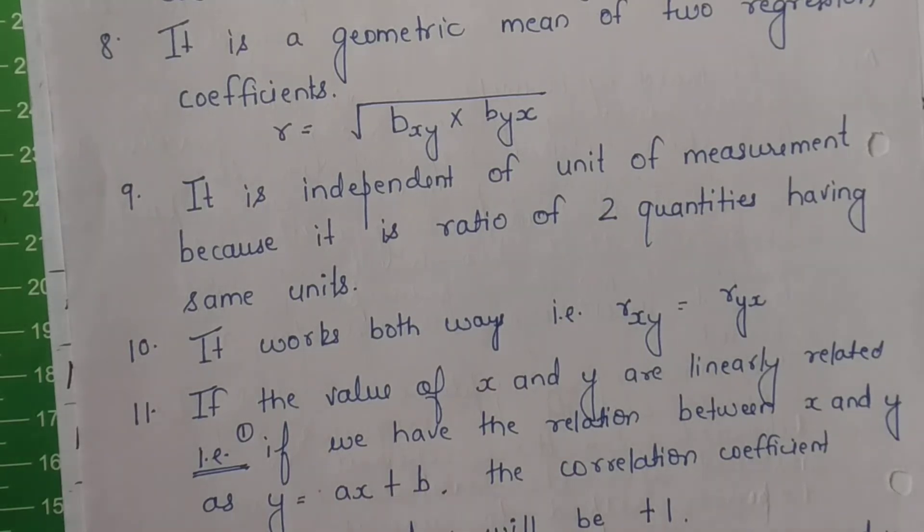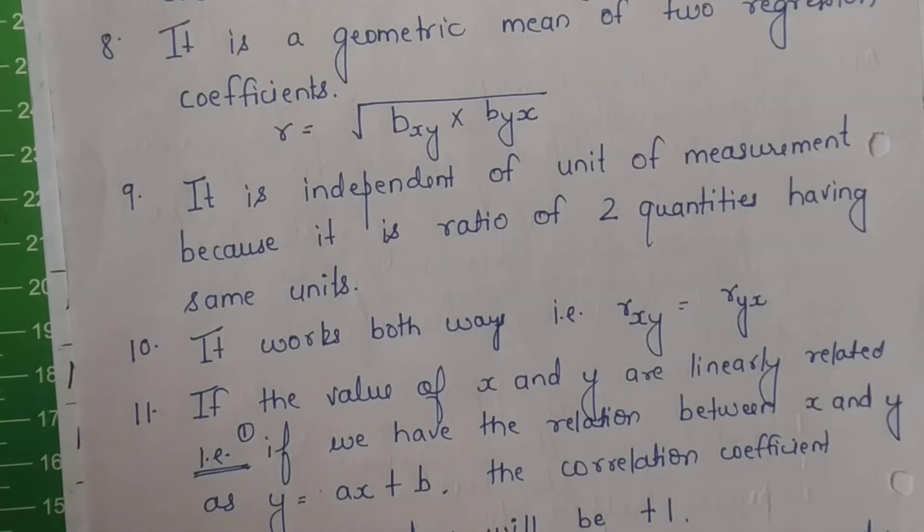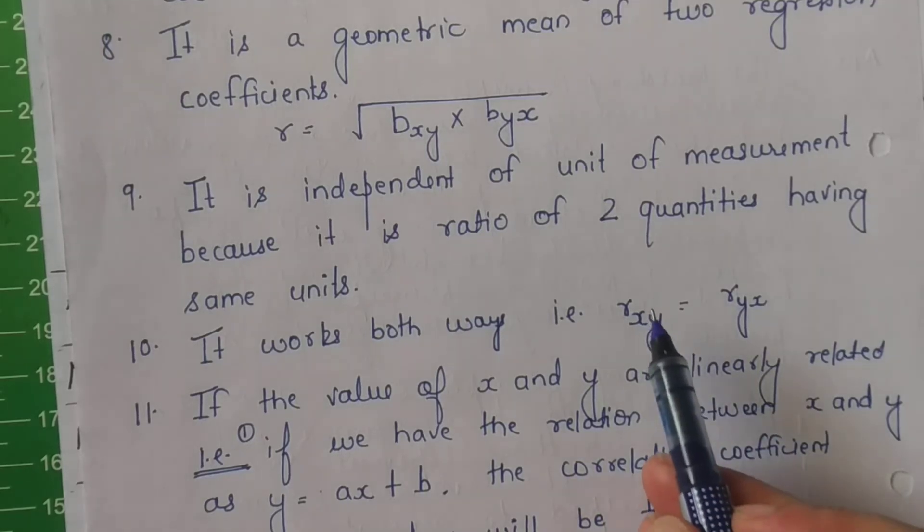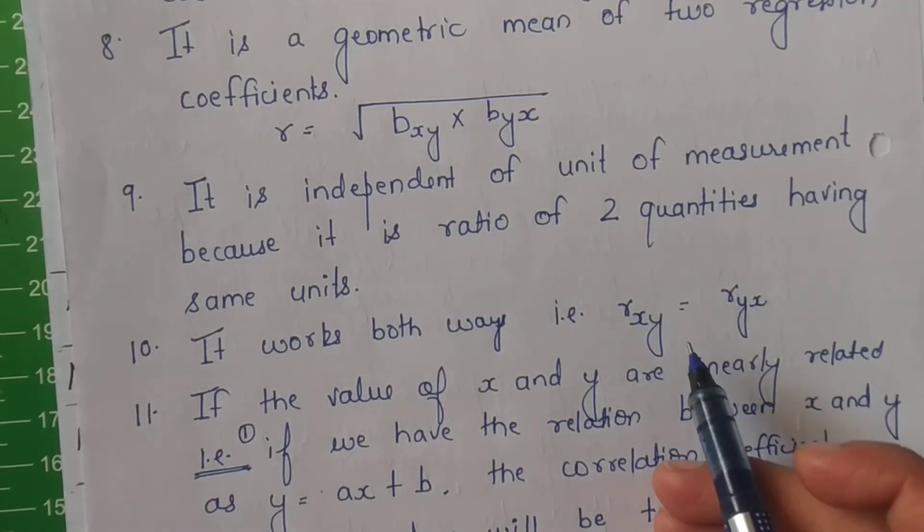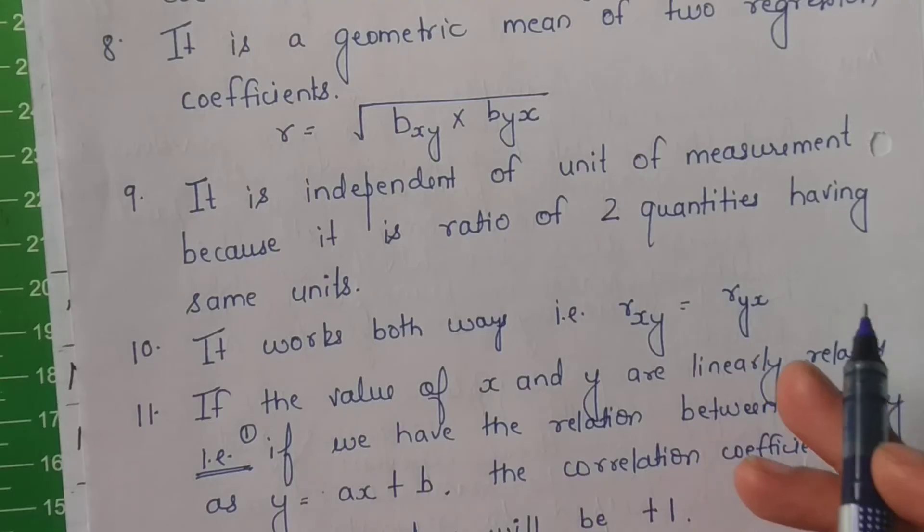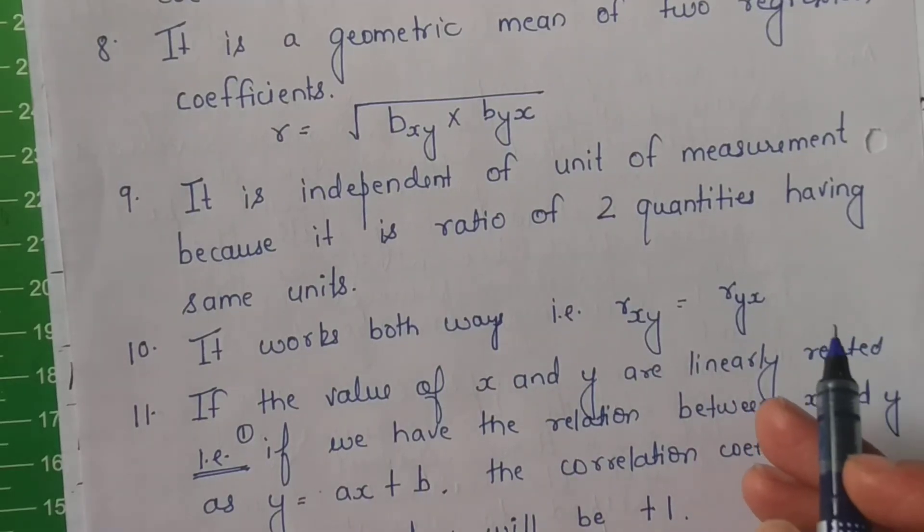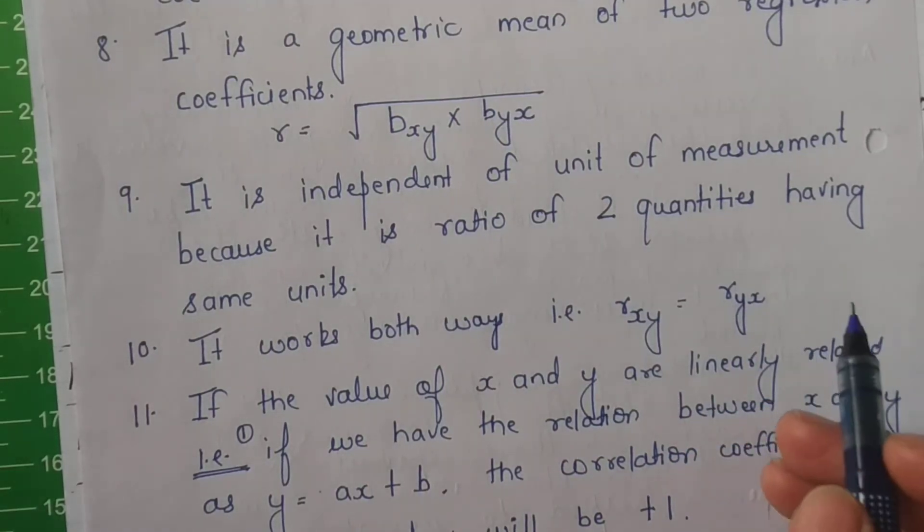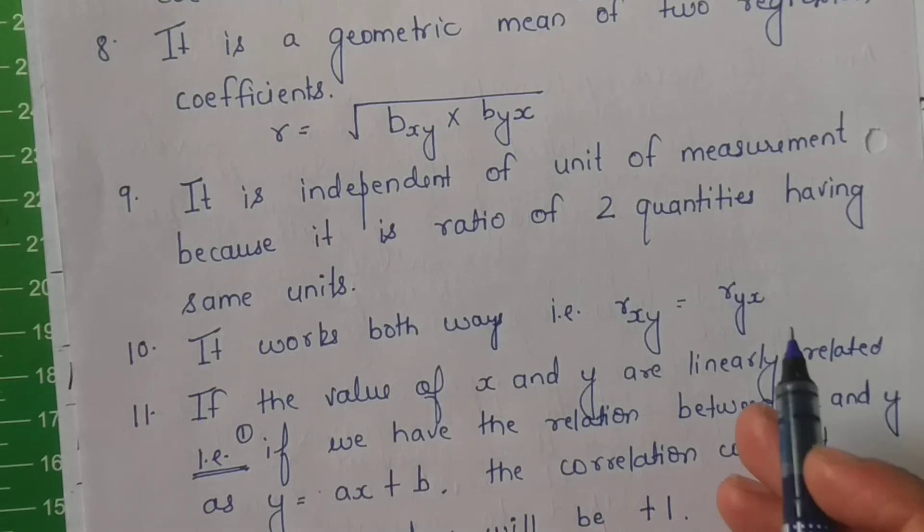Yeh koi, agar aapke dono variable centimeter mein hai ya agar aapke dono variable number of students ki form mein hai. Yeh dono variable jo hai, woh kilometers mein hai, toh aapka r ka answer centimeter, kilometer, ya number of students nahi aayega. Bilkul ek simple sa value hoga jo ki minus 1 se leke 1 ki beech mein kahin bhi ho sakta hai. Aur simply yeh aapko strength nikalta hai. Na iske peeche percentage lagta hai.